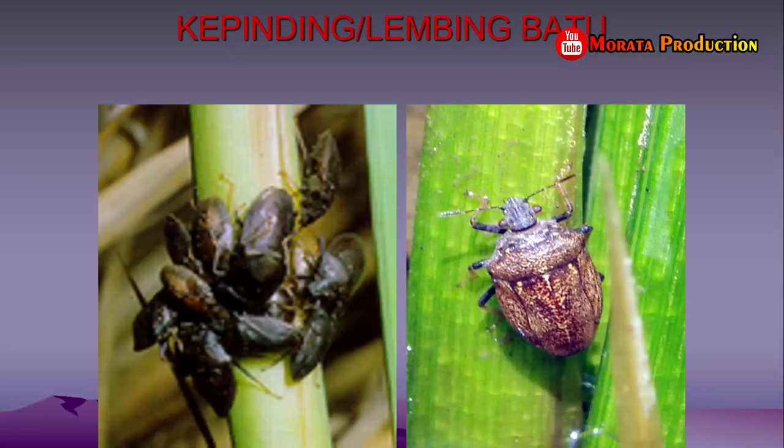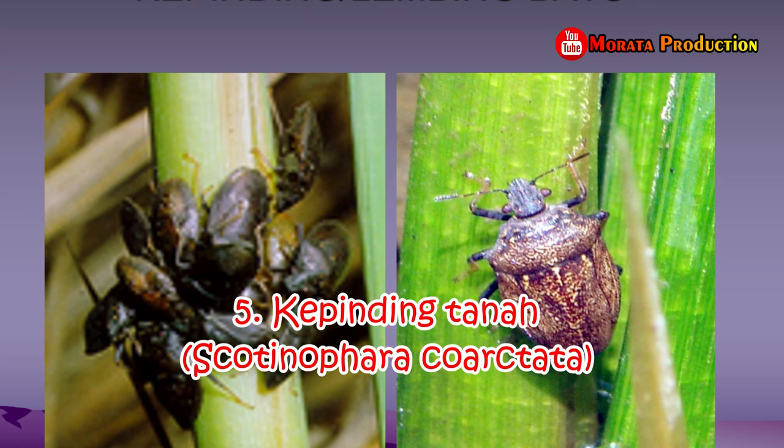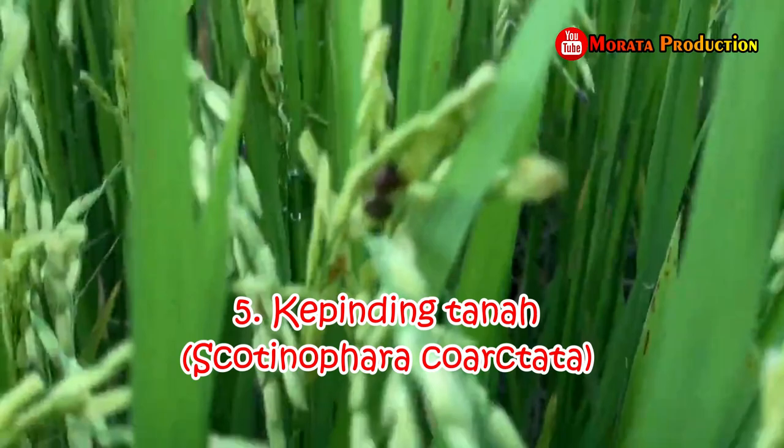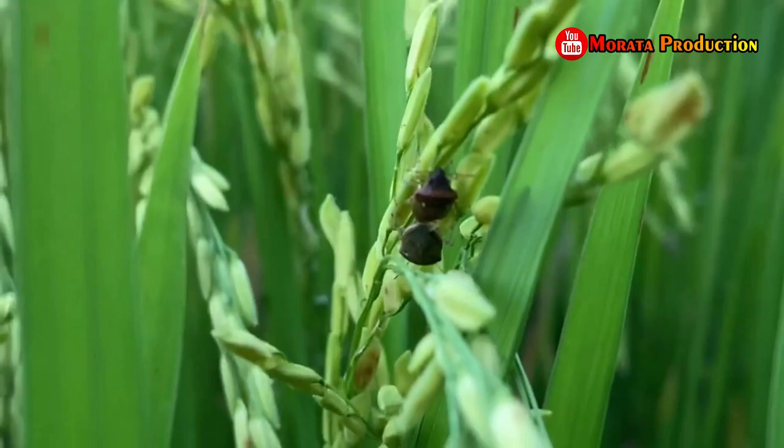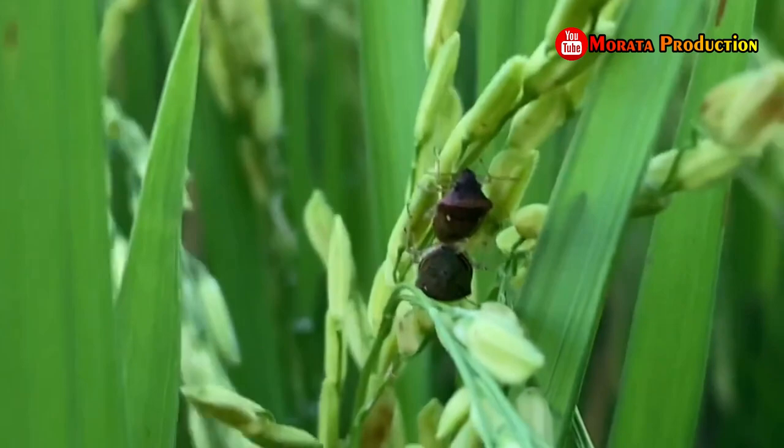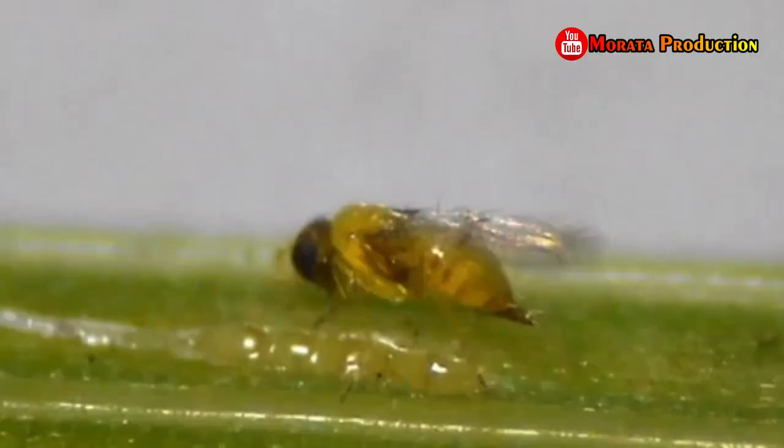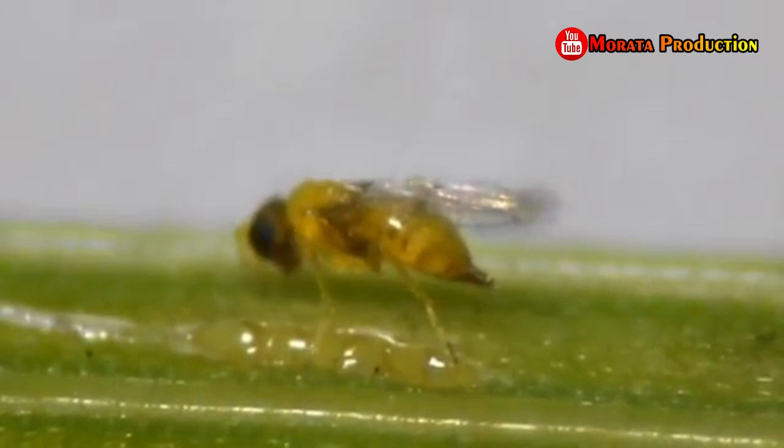Yang kelima yaitu kepinding tanah dengan bahasa latin Scotinophara coarctata. Hama ini menghisap cairan tanaman pada batang yang menyebabkan pengurangan energi dan unsur hara, serta tanaman menjadi kerdil dengan daun-daun yang berwarna coklat kemerahan dan bahkan kekuningan.